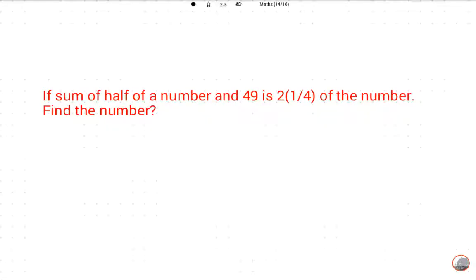Please subscribe this channel. Okay, now let's start to read this question. If sum of half of a number and 49 is 2 and 1 upon 4 of the number, find the number.